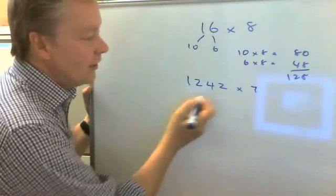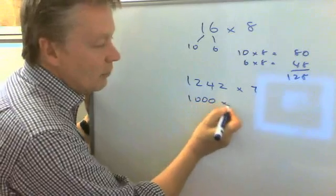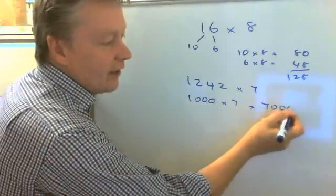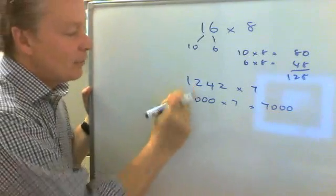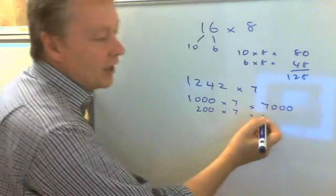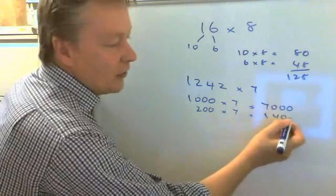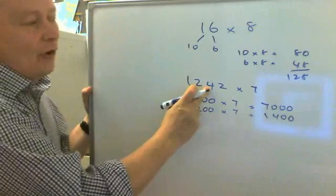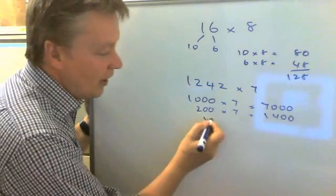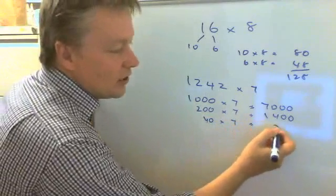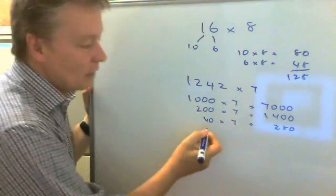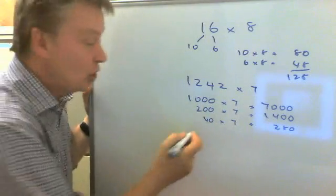So this number then becomes 1000 multiplied by 7, which equals 7000. This number is 200 multiplied by 7, which equals 1400. 40 multiplied by 7, which equals 280. And 7 multiplied by 2, or 7 units,